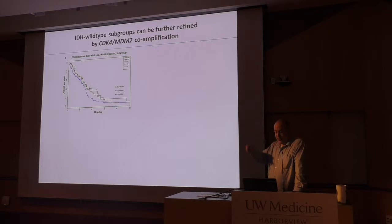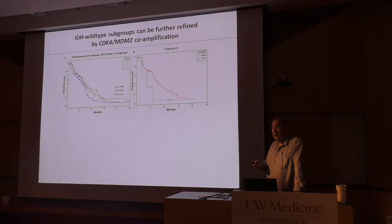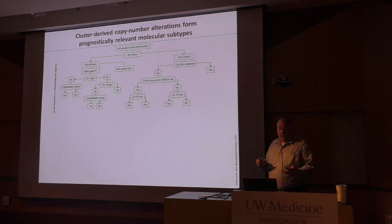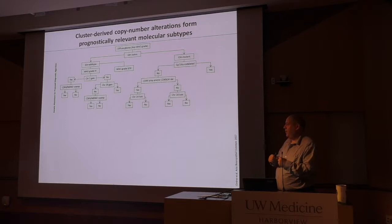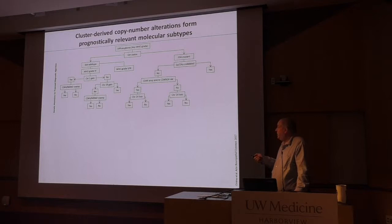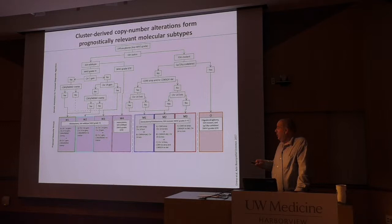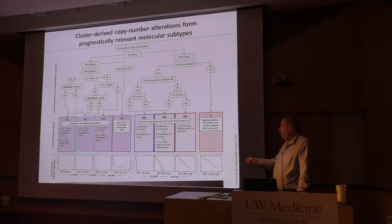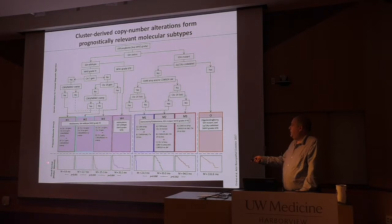CDK4 and MDM2 amplification, which showed up on copy number plots, can further refine each cluster. Using copy number alterations to define molecular subtypes — looking at chromosome 1, chromosome 19, CDK4 and MDM2 amplification, or CDKN2A homozygous deletion — we can generate an algorithm for IDH wild-type glioblastomas, lower-grade IDH wild-type tumors, IDH mutant gliomas, and oligodendrogliomas. This gives a nice risk stratification based on copy number-derived classifications.